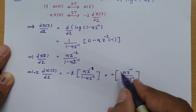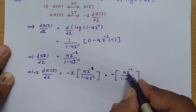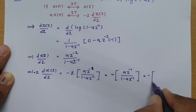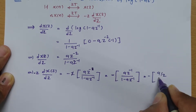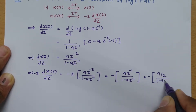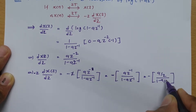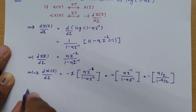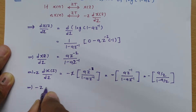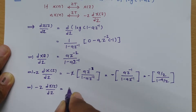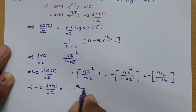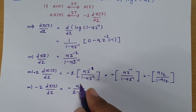Let us further simplify this term. Since z⁻¹ = 1/z, we can write this as -(a/z) divided by (1 - a/z). Taking LCM, we find that -z · dX(z)/dz equals -a divided by (z - a). So the expression is -a/(z - a).